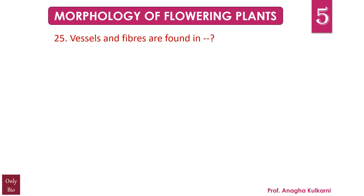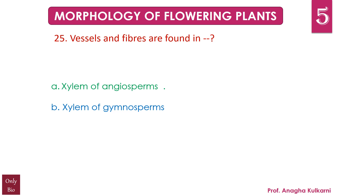Question number 25. Vessels and fibers are found in dash. A. Xylem of angiosperms. B. Xylem of gymnosperms. C. Both A and B. D. None of these. The correct answer for this question is A — Xylem of angiosperms. So vessels and fibers are found in the xylem of angiosperms.